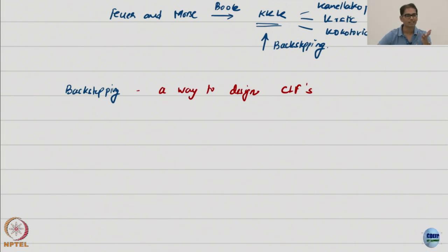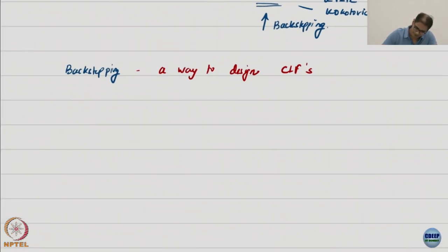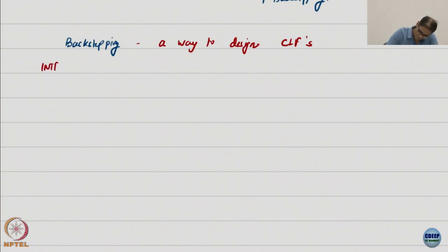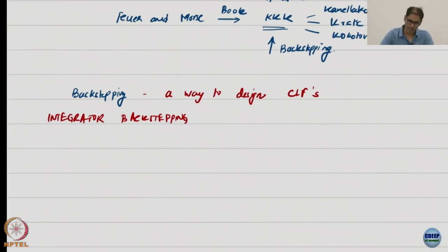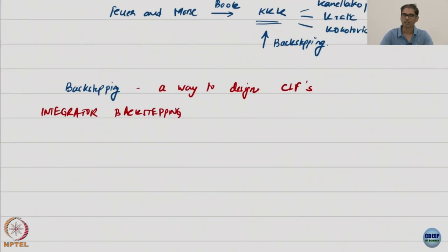Backstepping is a means of constructing a CLF, which helps a lot of people who ask me how to construct Lyapunov functions. This is one of the simplest methods where you'll see step by step how to construct a Lyapunov function. Of course, it has its own limitations. Where we'll start is with the notion of integrator backstepping.